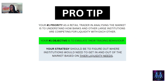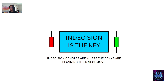Pro tip: your number one priority as a retail trader is to understand how banks and other large institutions are competing for liquidity with each other. Your number one objective is to emulate their trading behavior — figure out where institutions would need to get in and out of the market based on their liquidity needs. Since the banks drive the markets, we have to know how they trade and trade side by side with them. Indecision is the key — indecision candles are where the banks are planning their next move, and this is the start of the market phases.